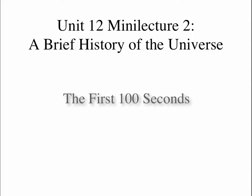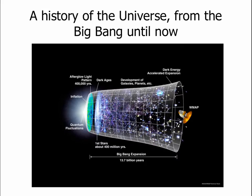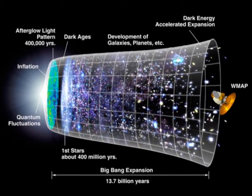Welcome back to unit 12. In this second mini lecture, we will apply everything we know about particle physics and astronomy to give you a brief history of the universe from Big Bang to the present. It is astounding that we are able to do this — that we as human beings can look back 13.7 billion years into the past. We are able to explain everything using our current theories of physics except for the earliest tiny fraction of a second.